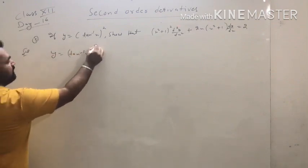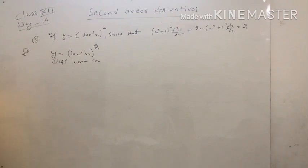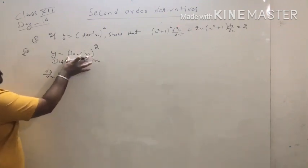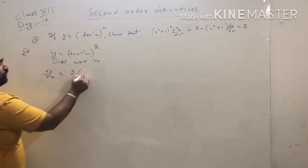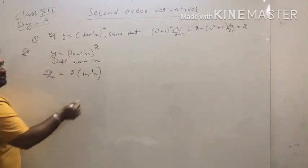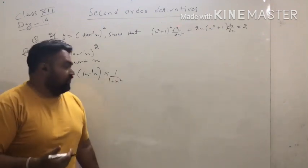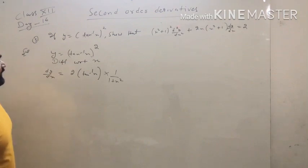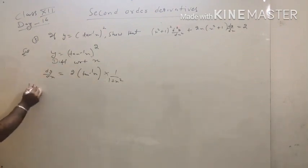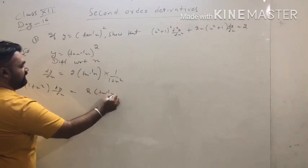Another important question. Solution: y equals (tan⁻¹x)². First step — differentiate with respect to x. The derivative of y is dy/dx. The derivative of (tan⁻¹x)²: first differentiate the exponent — 2·tan⁻¹x — then multiply by the derivative of tan⁻¹x which is 1/(1 + x²).